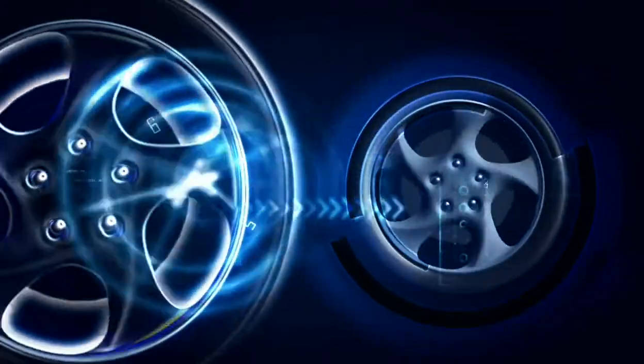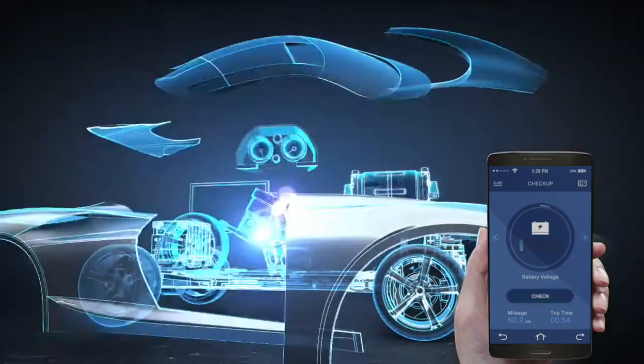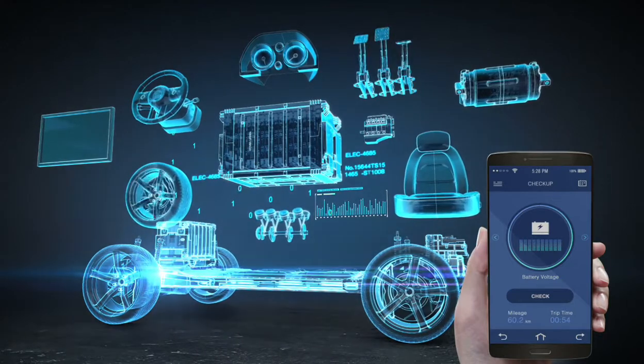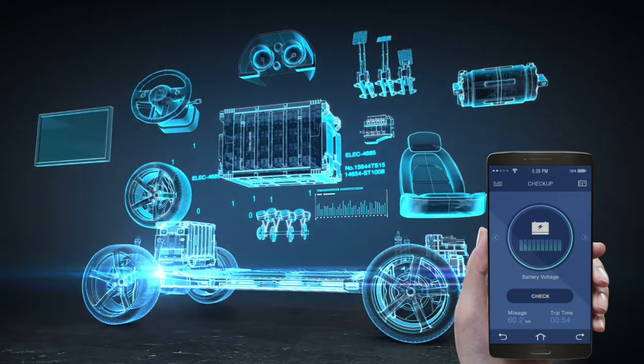Sensors embedded in the tire can measure many parameters, including pressure, internal temperature, surface temperature, tread depth, road condition, axle load, and wheel alignment.